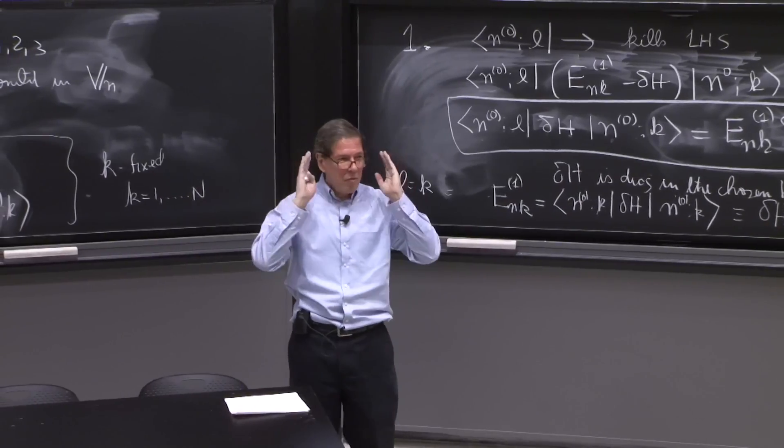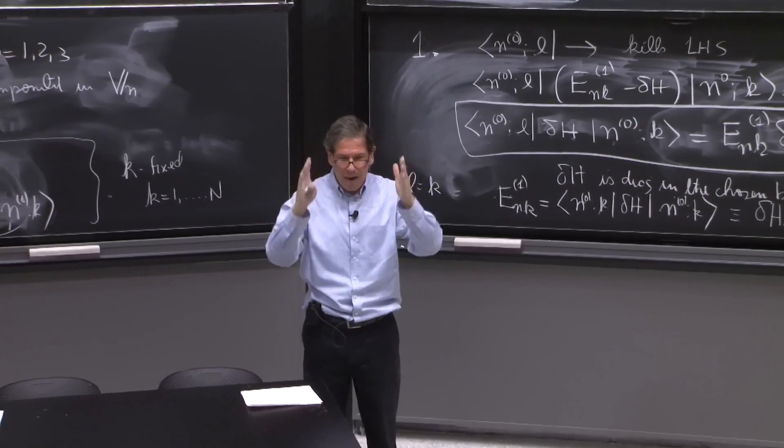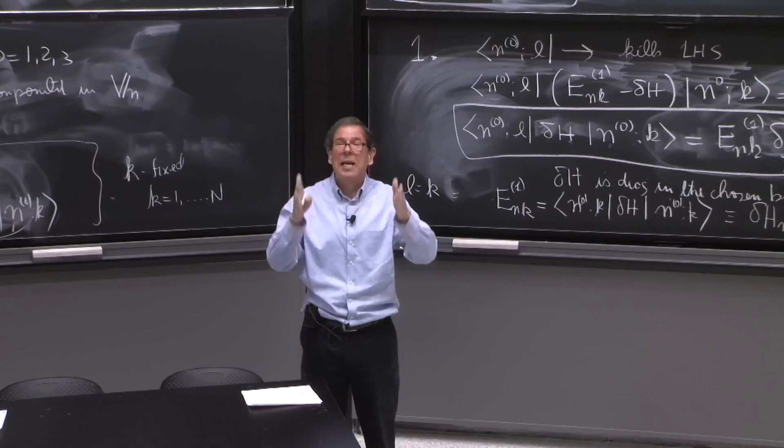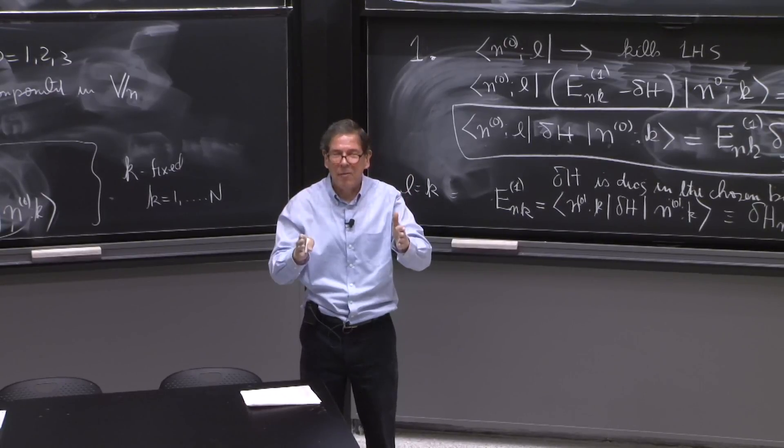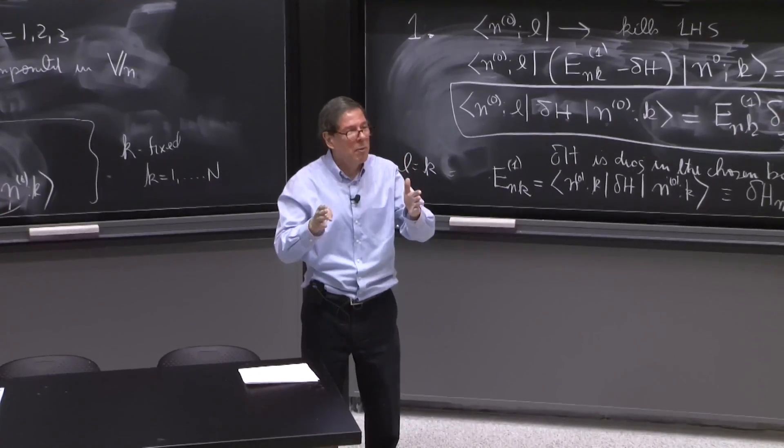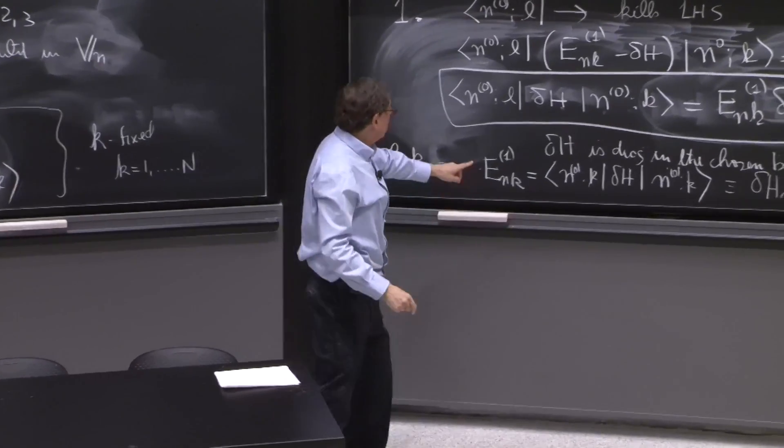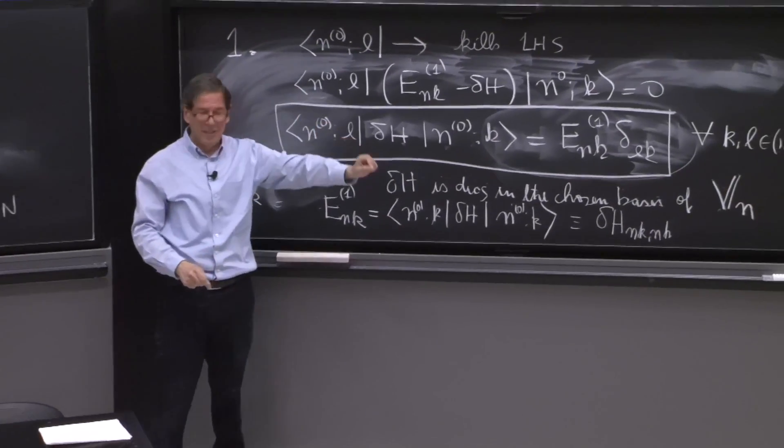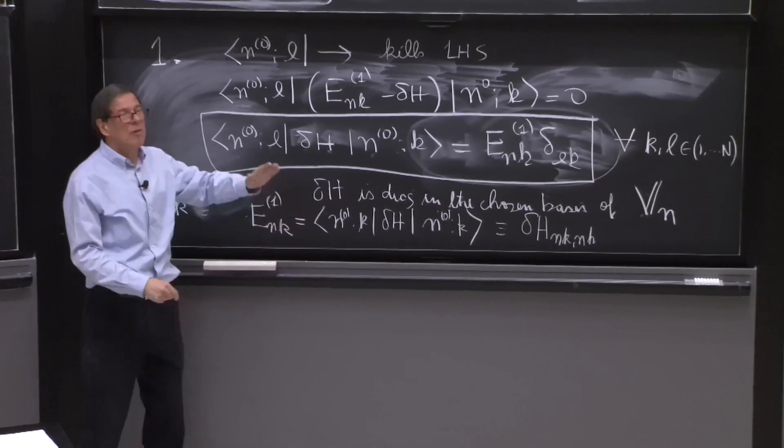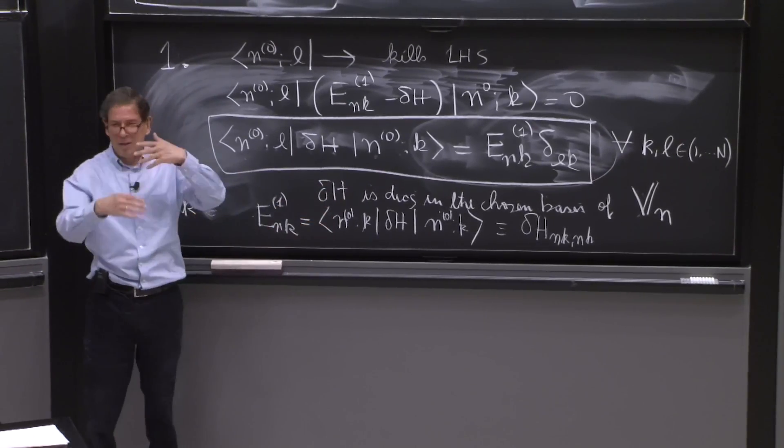So we've done the first step. And we've realized that this perturbation is a little funny. You really have to get started with the right basis. And what is the right basis? The basis that makes delta H diagonal. We'll see that everything is much simpler if the eigenvalues of this matrix are all different.